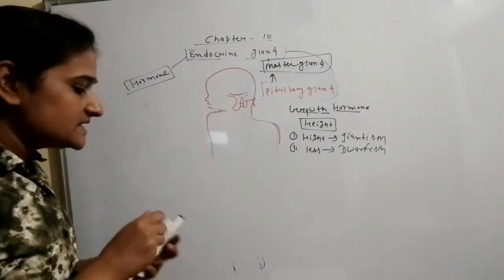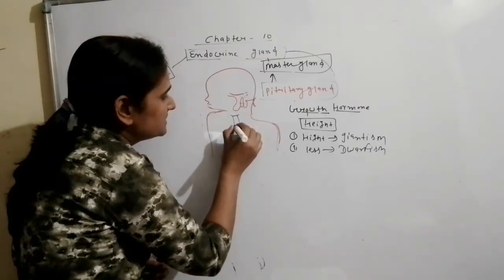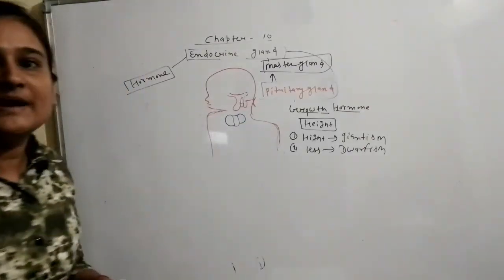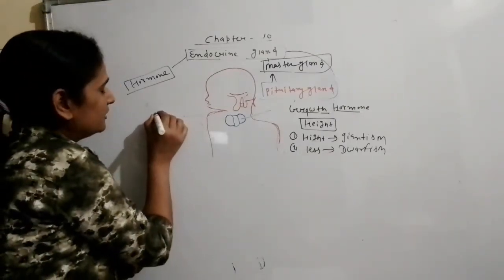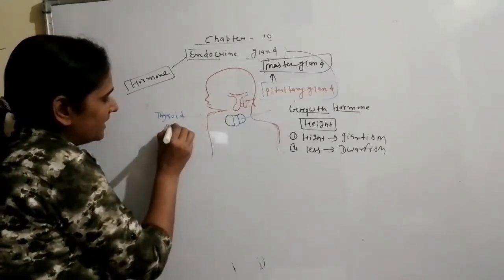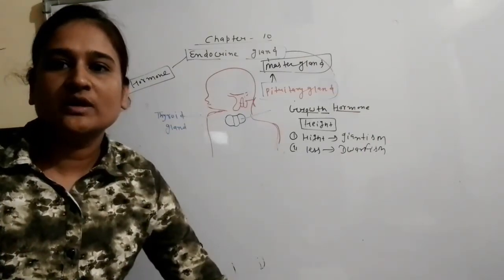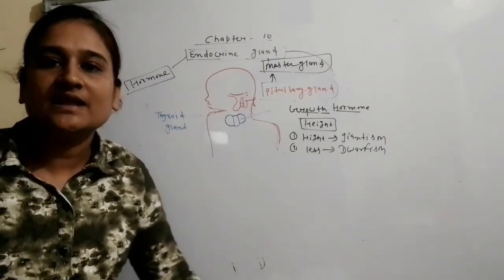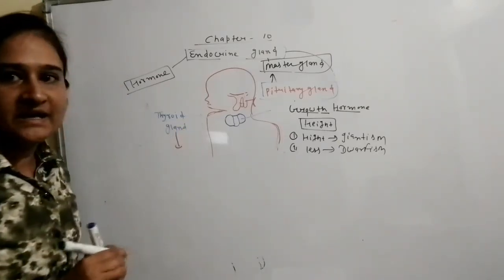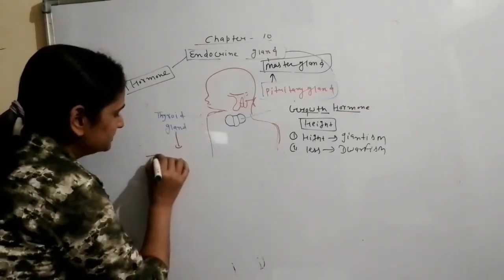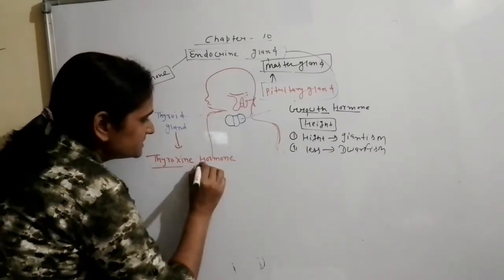This gland is called the thyroid gland. The thyroid gland secretes the thyroxine hormone.